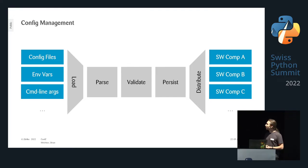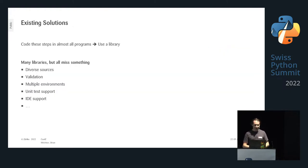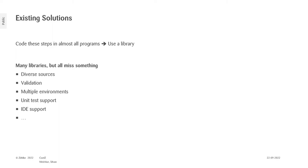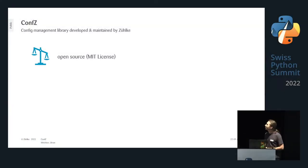At some point it's worth writing a library. There are already a lot of configuration management libraries, but we didn't find the sweet spot. Either they had only very specific sources — like argparse, which is really just meant for arguments — or they lacked validation, multiple environment support, and so on. There was always something missing, so we thought: there are 10 competing standards, let's create an 11th.